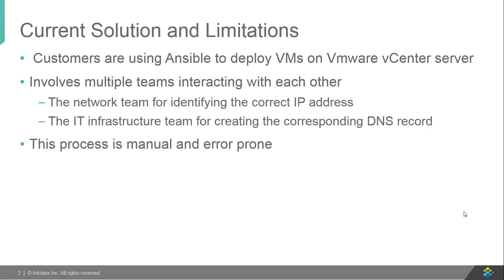Over the last couple of years, Ansible has become one of the most commonly used configuration management tools, thanks to its simplicity and easy-to-use architecture. Quite a few organizations are using Ansible to provision VMs on VMware vCenter server because of its rich configuration and management capabilities. However, once a VM is provisioned using Ansible, multiple infrastructure teams interact with each other to assign an IP address and create corresponding DNS records. This approach is inefficient since it's manual, error-prone, and time-consuming.